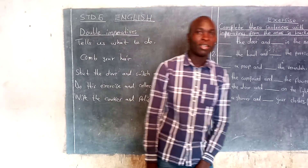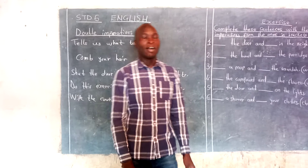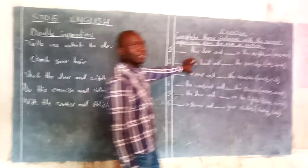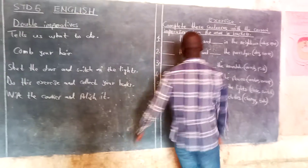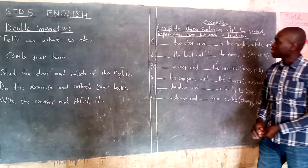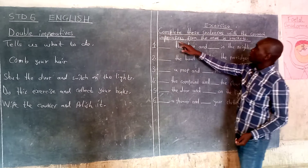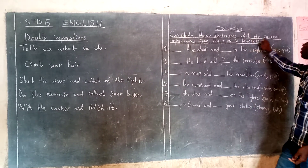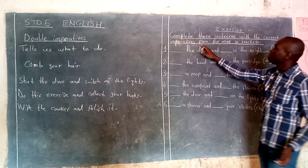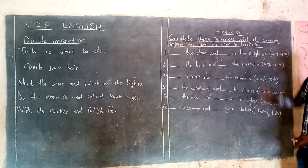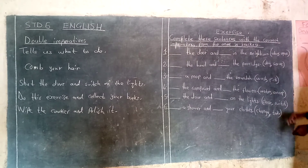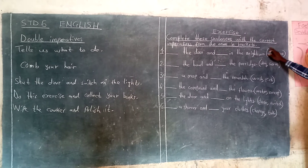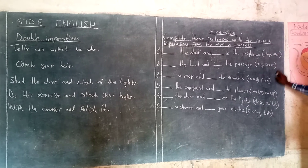I hope you have understood that. This one is a very simple topic. Now I want you to try a simple exercise. I have a simple exercise for you whereby you are going to complete these sentences with the correct imperatives from the ones given in the brackets.